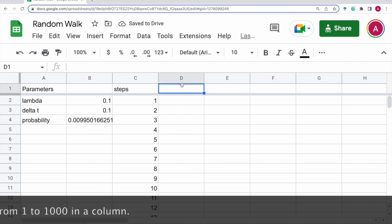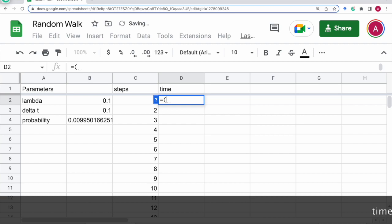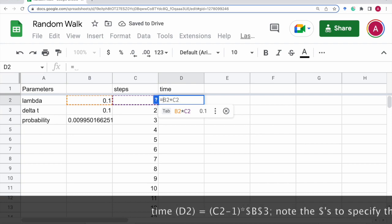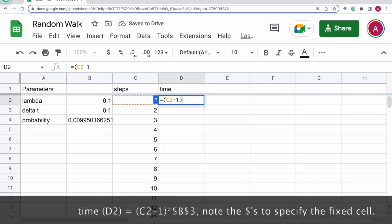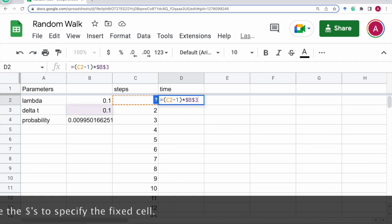And time. Time is given by this row. Wait a minute. So let's get c2 minus 1 times delta t. Delta t is b3. So we need these dollar signs because it's a fixed address.